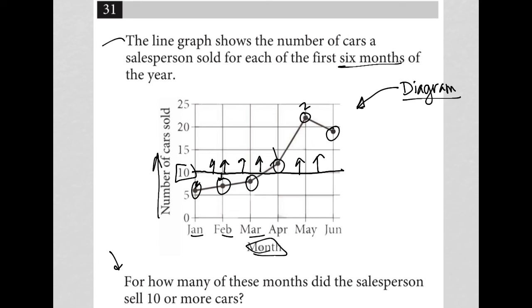That is one, two, and three months, right? So, three months. Three is our correct answer. Three is correct.